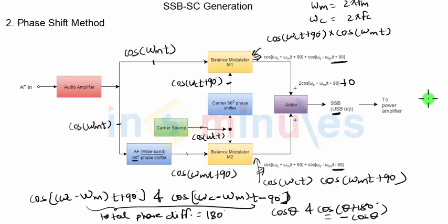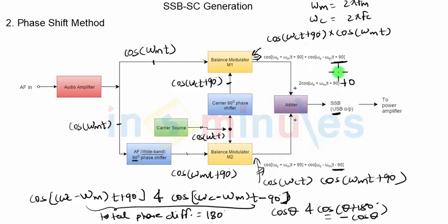How are we able to achieve the suppression of one of the two sidebands? That is simply done by providing phase shifts of 90 degrees to every term. To the upper sideband we provide the phase shift of 90 degrees in both cases, so it adds up to twice cos(ωc + ωm). But to the lower sideband we provide +90° in one case and −90° in the other, so the total phase difference is 180°, and their sum turns out to be zero.